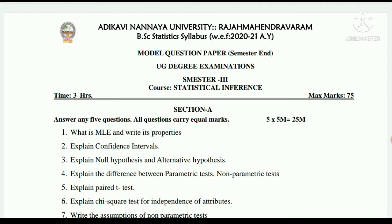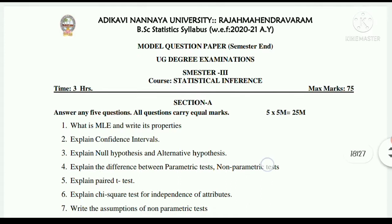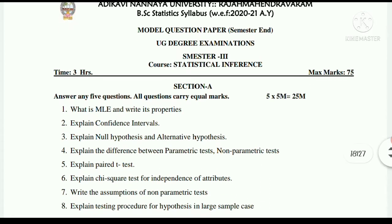First, the short answer questions: What is MLE and write its properties? Explain confidence intervals. Explain null hypothesis and alternative hypothesis. Explain the differences between parametric tests and non-parametric tests. Explain paired t-test. Explain chi-square test for independence of attributes. Write the assumptions of non-parametric tests. Explain testing procedure for hypotheses in large sample cases.